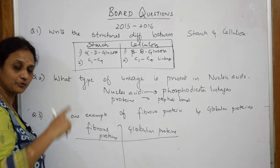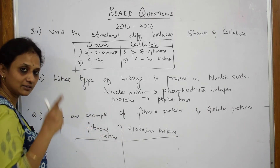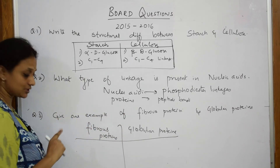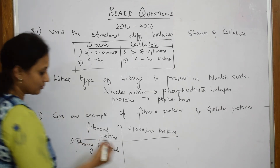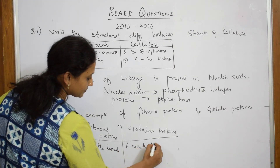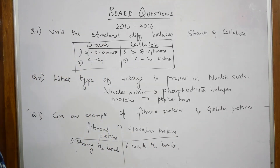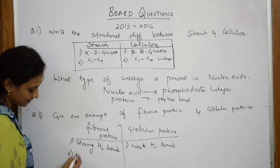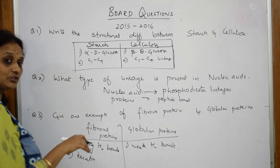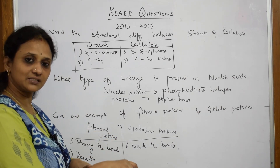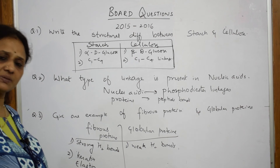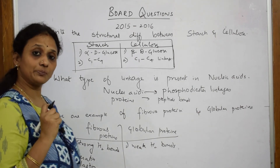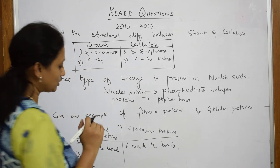Fibrous proteins form threads and fibers, held together by strong hydrogen bonds. Globular proteins are coiled into a globule shape and have weak hydrogen bonds. Examples of fibrous proteins include keratin — found in hair — as well as collagen and elastin, which are present in skin cells. Keratin, elastin, and collagen are the best examples for fibrous proteins.